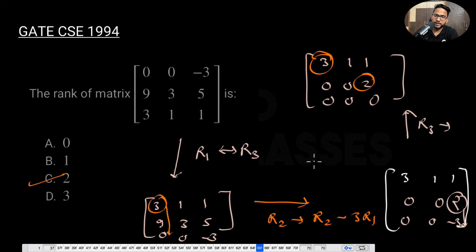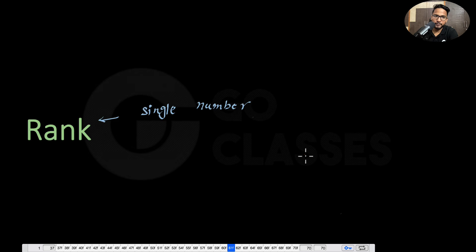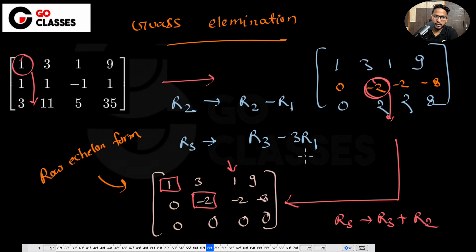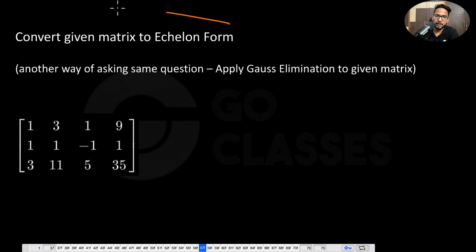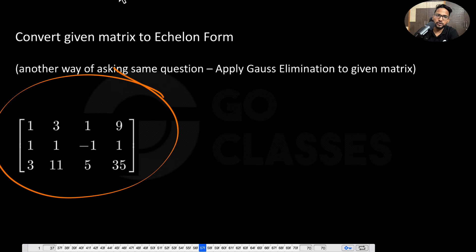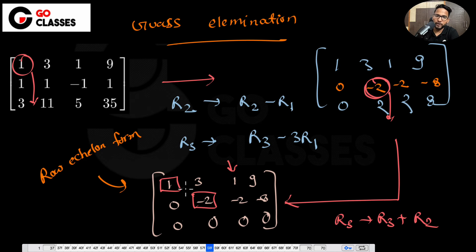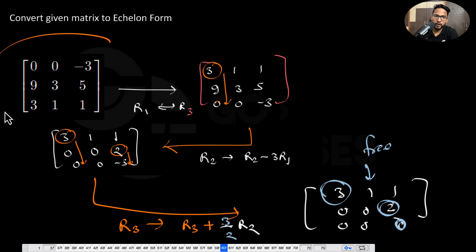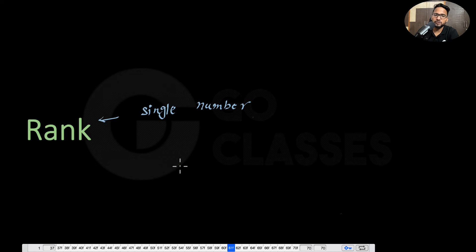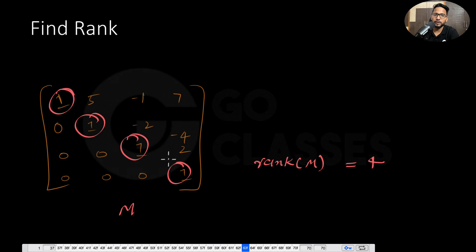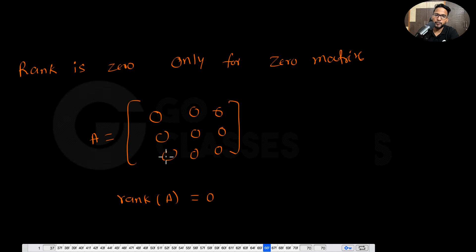Whatever earlier examples we did, you can find the rank just using Gaussian elimination. For example, in the matrix we were converting to echelon form earlier, once you get the echelon form and count the pivot elements — there are 2 — so the rank of that matrix is 2. Similarly, for this particular matrix, the rank is also 2. That's how you solve these questions: convert to echelon form and count the pivot elements.